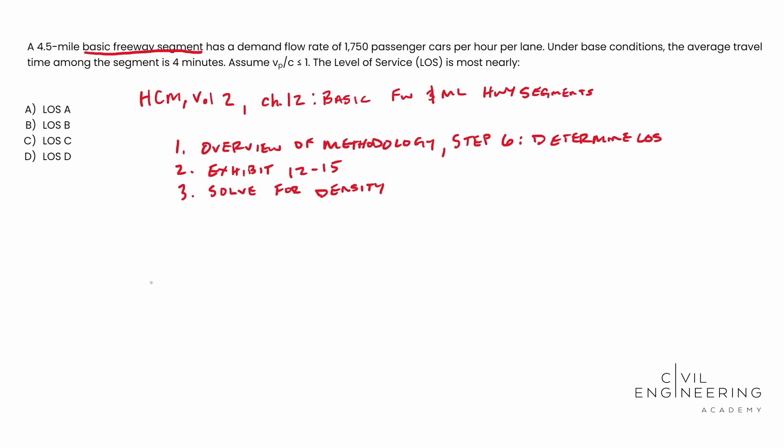And then step number four is we need to check the method of overview of methodology again. And you'll notice that density is solved in step five and it gives us an exhibit 12-11. So I'm going to write that down here. We have exhibit 12-11. And this guy says this, density is equal to V sub P over S. Now, what do these mean? D, the capital D is density and the units are provided in the highway capacity manual. It's passenger cars per mile per lane. V sub P is demand flow rate. So that's passenger cars per hour per lane. And then the S is the mean speed of the traffic stream under the base conditions, which is miles per hour. So we're given a lot of juicy details in this problem statement. So we're going to go ahead and get started with solving this guy.